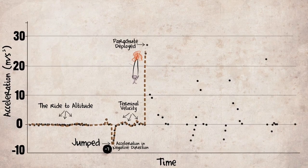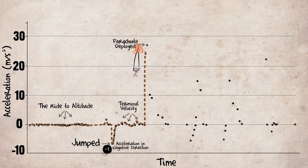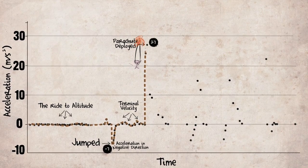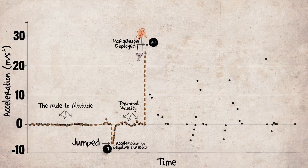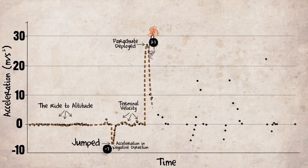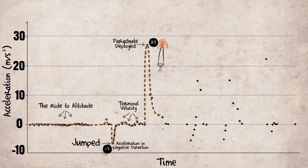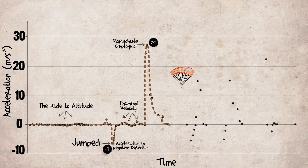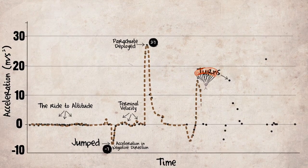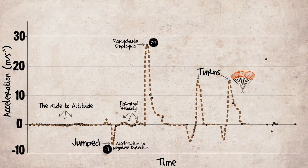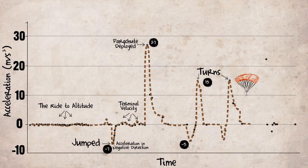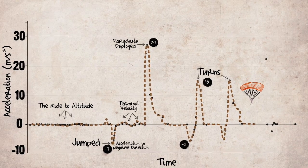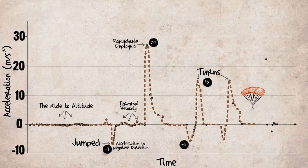When I deployed the parachute, I averaged about 27 meters per second squared. Remember, it takes almost a thousand feet to open the parachute, so it's actually slower than you might think. In fact, a few big diving turns with the canopy gave peaks of acceleration around 15 meters per second squared, happening on the recovery of the parachute.